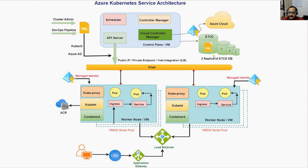etcd is a key-value database that stores data. Microsoft always maintains three replicas of this database — if something goes wrong with one replica, it automatically uses another. When a cluster admin or a DevOps pipeline deploys something on the AKS cluster using a YAML file or kubectl commands, that configuration is stored in the etcd database. Based on this configuration, the AKS cluster creates pods or services inside the worker node.